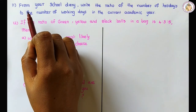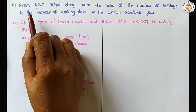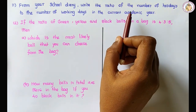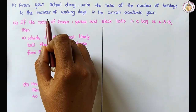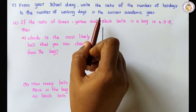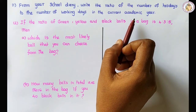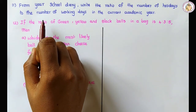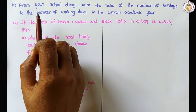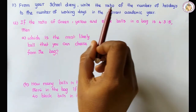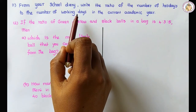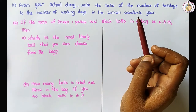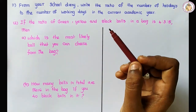Eleventh question: from your school diary, write the ratio of the number of holidays to the number of working days in the current academic year. For this question, you can answer yourself — see the number of holidays and working days in your handbook and write the ratio.